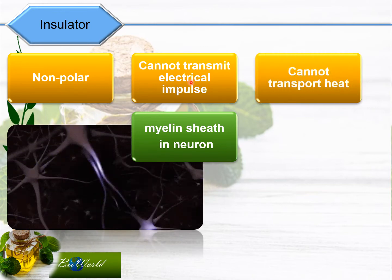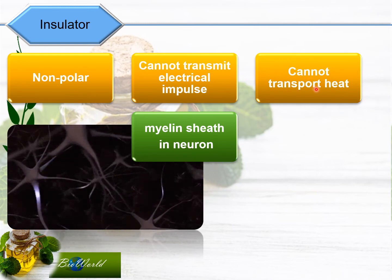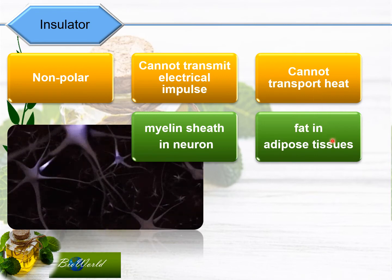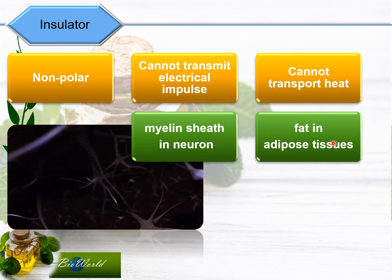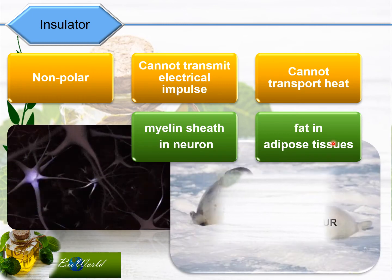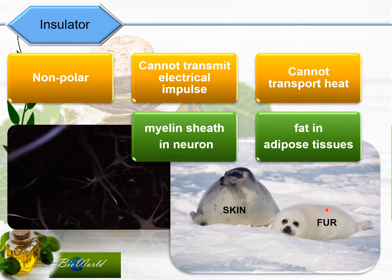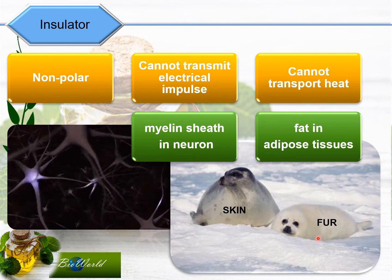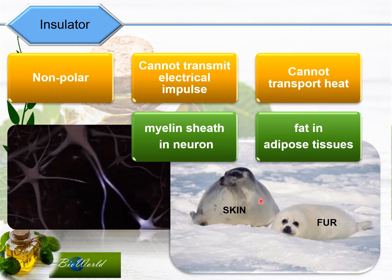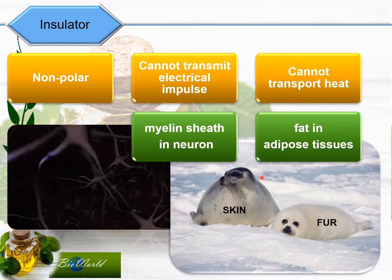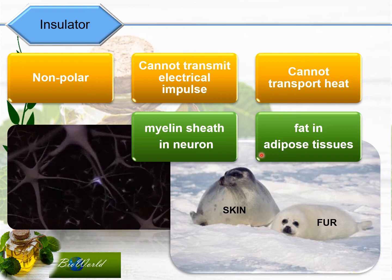Triglycerides are also heat insulators because they do not transport heat. So when fats are stored in adipose tissues under our skin, our body heat does not escape to the environment. We can see this applied in animals living in cold climates. This is a seal — the baby seal known as the pup is protected by a thick layer of fur to keep it warm. But the adult has no fur; instead it has skin. Yet it won't be cold because under the skin it has a thick layer of adipose tissue insulating it from the cold outside.